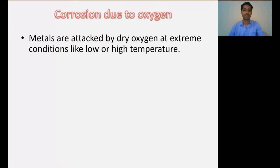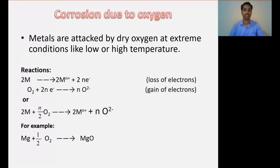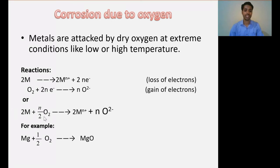This dry corrosion may be because of oxygen or because of other gases. In the case of oxidation corrosion — corrosion due to oxygen — metals are attacked by dry oxygen at extreme conditions like low or high temperature. Metal reacts with the oxygen gas to produce metal oxides. For example, magnesium reacts with oxygen gas producing magnesium oxide, forming a magnesium oxide layer on the metal surface.